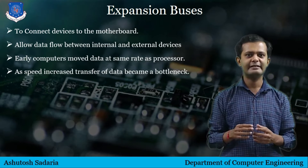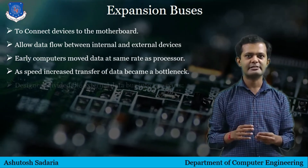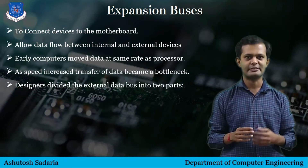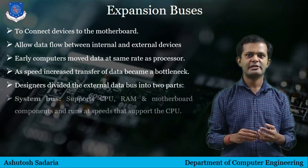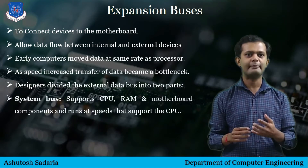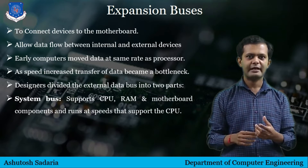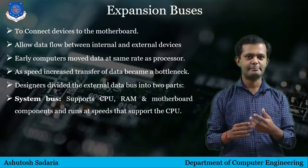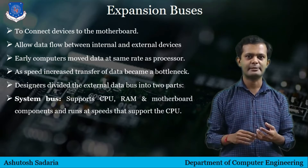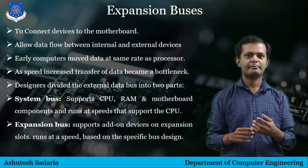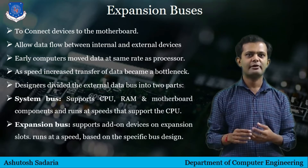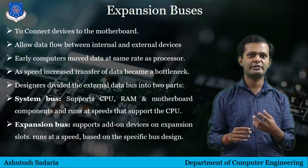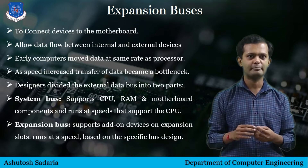Therefore the design capability of the bus needed to evolve. Designers divided the external data bus into two parts: the system bus and the expansion bus. The system bus supports the CPU, RAM, and other motherboard components and runs at the speed of the supported CPU. The expansion bus supports add-on devices by means of expansion slots and runs at a steady rate based on the specific design of that bus.